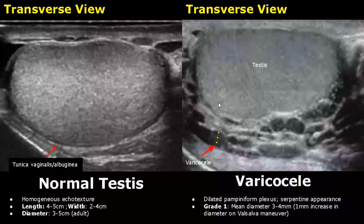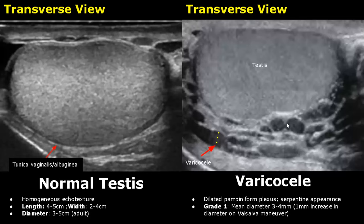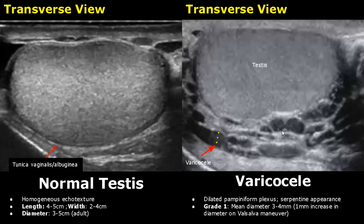A varicocele means there is dilatation of the pampiniform plexus, which are various small veins in the spermatic cord. The dilated veins give a serpentine appearance. There are different ways to grade a varicocele; the one used here is based on mean diameter of the veins. In grade one, the mean diameter is 3 to 4 millimeters, and on Valsalva maneuver there is a 1 millimeter increase in diameter.